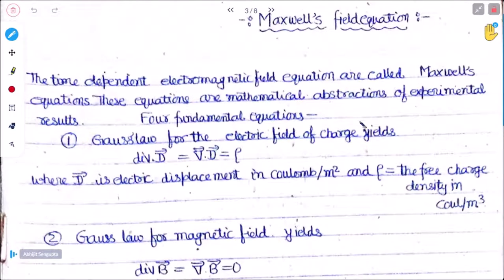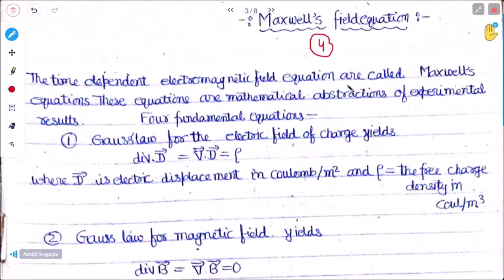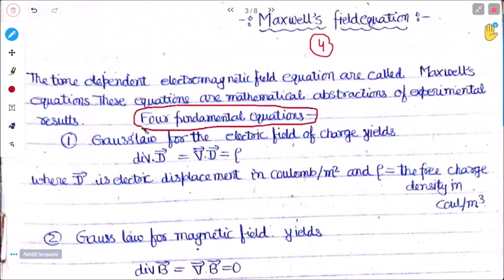We will start with Maxwell's field equations, which are of four types. The time-independent electromagnetic field equations are called Maxwell's field equations — these equations are mathematical abstractions of experimental results. There are four fundamental equations, and we need to remember all four because they appear in advanced form in different chapters. The first is Gauss's law for the electrostatic field.